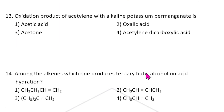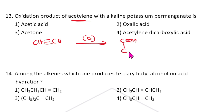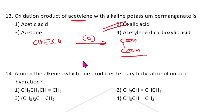The oxidation product of acetylene with alkaline potassium permanganate: CH≡CH undergoes oxidation. The product is COOH-COOH — oxalic acid.